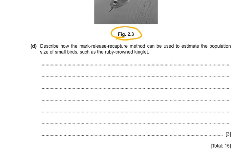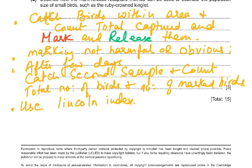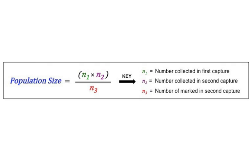This is called the Lincoln or Peterson index. The marking technique should not be harmful or too obvious. Give at least two days — but not too long — so that birds don't migrate in or out, giving enough time for the population to mix before the second sample is taken. You can say a few days or a week but not more than that. The formula is: population size N = N1 × N2 / N3, where N1 is the number collected in the first capture, N2 is the number collected in the second capture, and N3 is the number of marked individuals in the second capture.